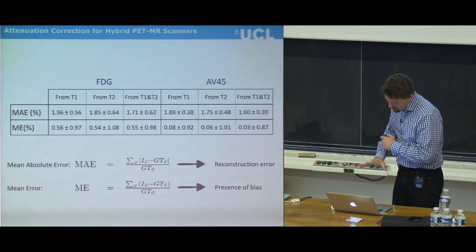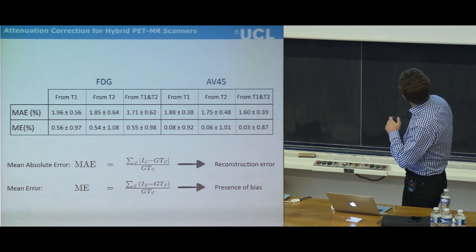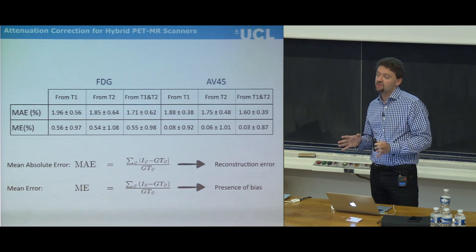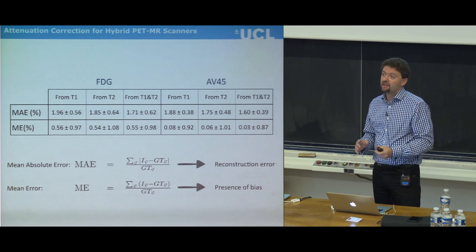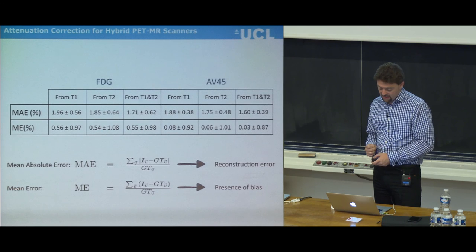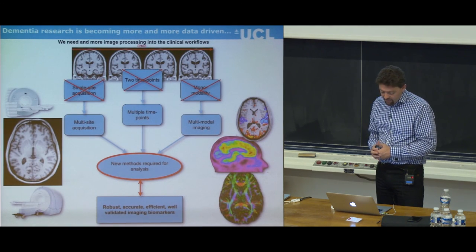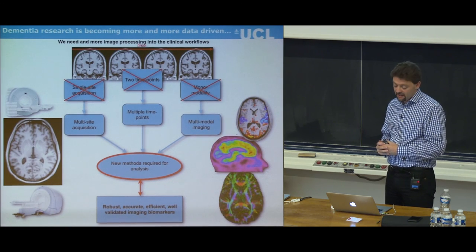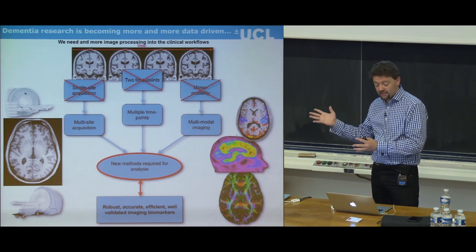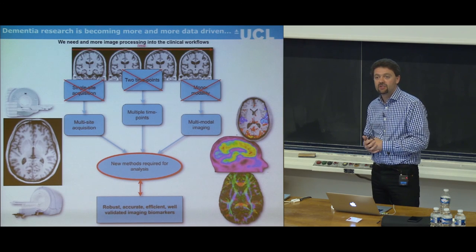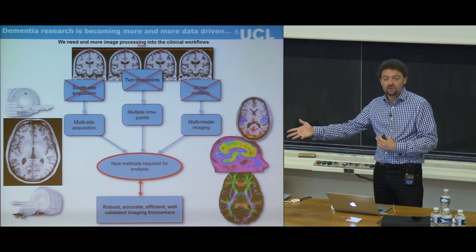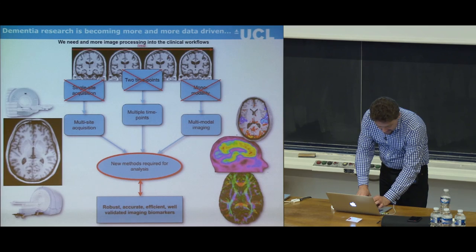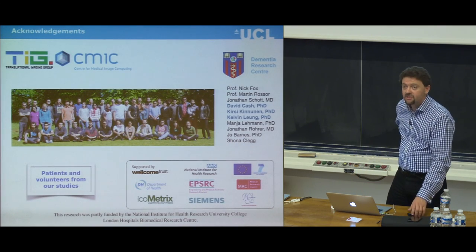In summary, this is a really exciting area with a lot of need for bright people. It is very rewarding — you can get your techniques used in the clinic and up to phase three trials. We had three algorithms commercialized to large pharma companies. It's very rewarding for students to say at the end of their PhD that their method was used on 7,000 scans in a phase three trial for a new drug. I hope I've excited you enough to do more research in this area. Thank you to my team, and I'm happy to answer questions.